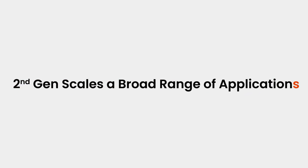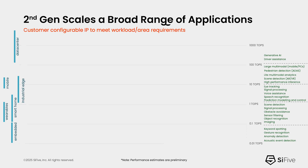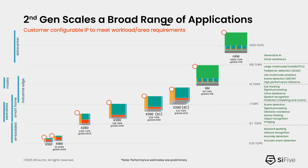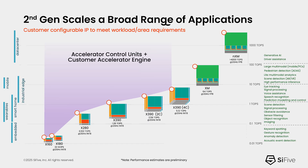We've designed the second generation of the intelligence family to scale across a very broad range of applications — from the X100 core in deep embedded all the way up to the XM series, which can be arrayed to provide very high AI throughput in data center applications. As well as using the cores by themselves, a very popular use is for customers to add their own acceleration, where they can hit very high performance levels targeted for their specific use cases.